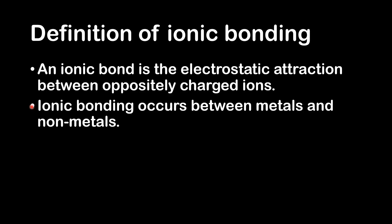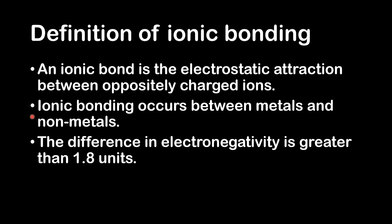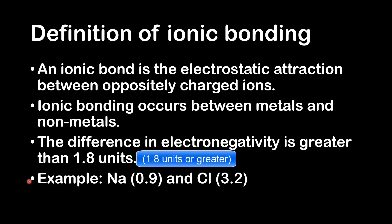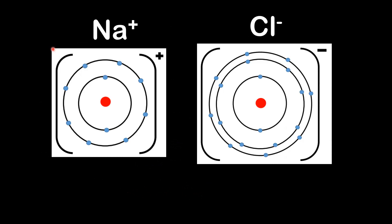Ionic bonding occurs between metals and non-metals. The difference in electronegativity is greater than 1.8 units. An example is sodium, which has an electronegativity value of 0.9, and chlorine, which has an electronegativity value of 3.2. The bond between sodium and chlorine is an ionic bond.